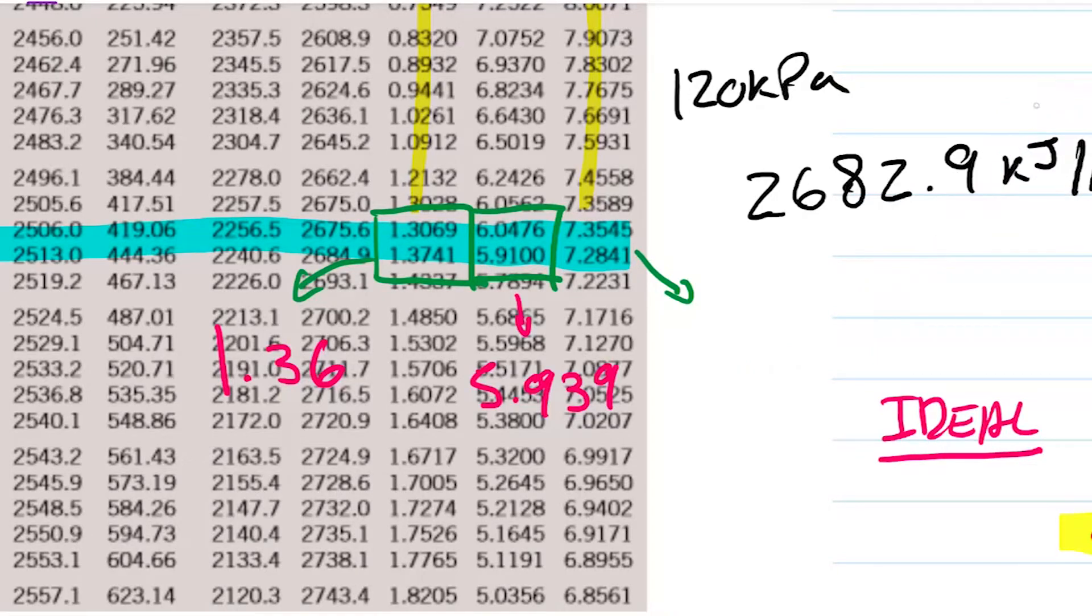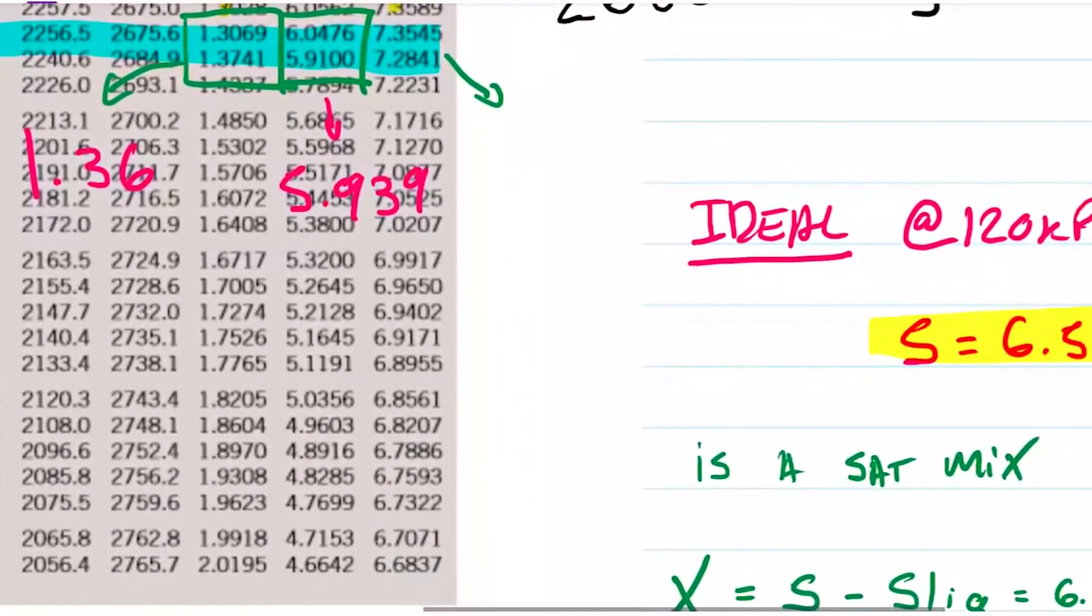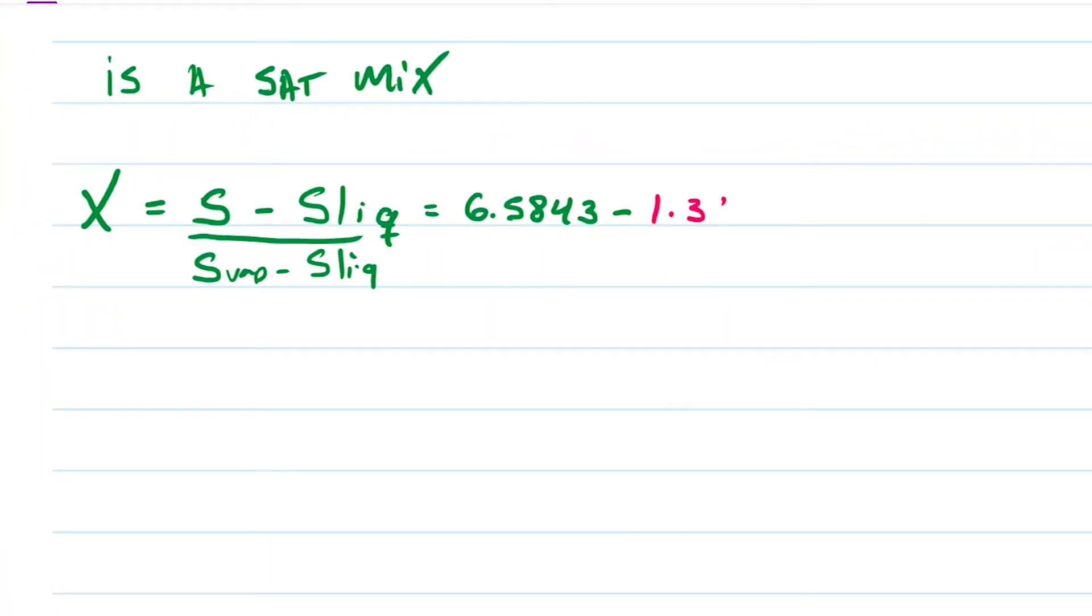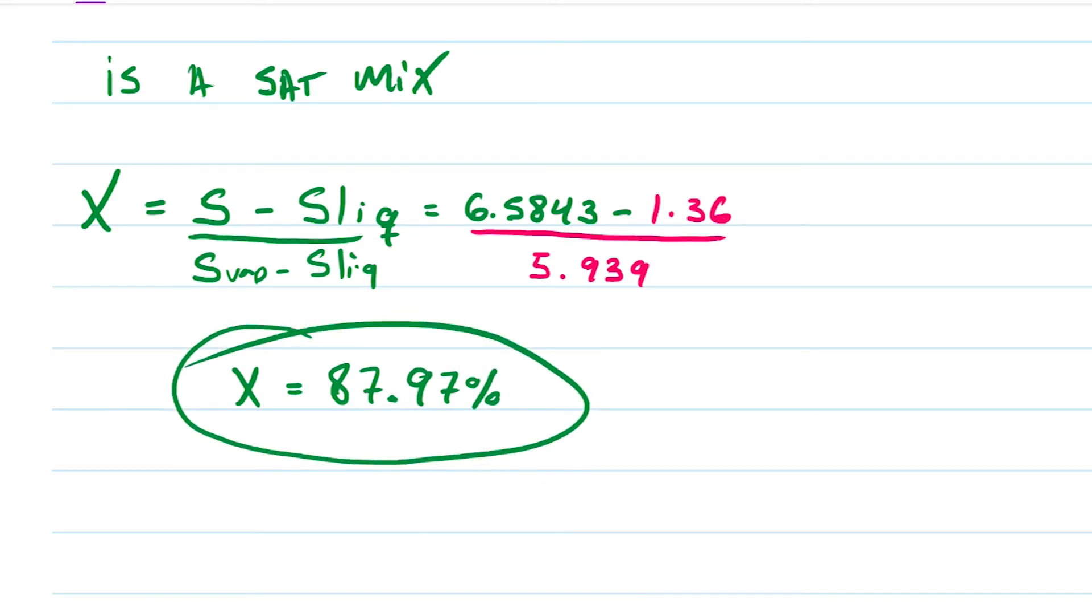And if we do interpolate, what I got here is 1.36 for this guy here. And then for the middle fella here I got 5.939. So I can go ahead and plug those values in, 1.36 and 5.939. So the quality that I find is 87.97%. So it means I have about 88% vapor and the rest of it is liquid.